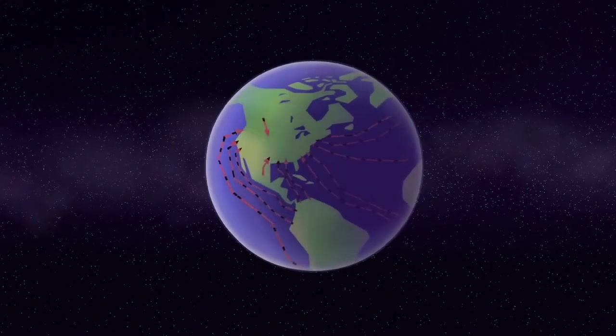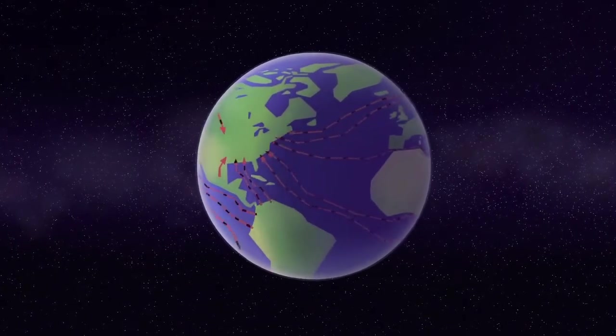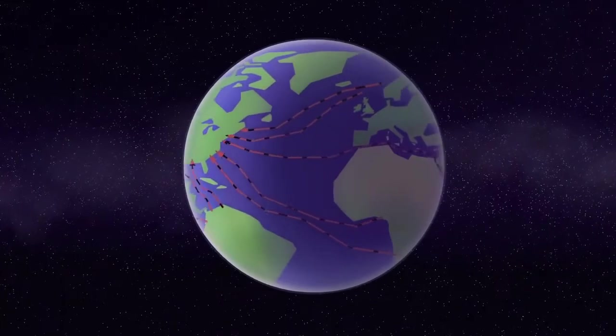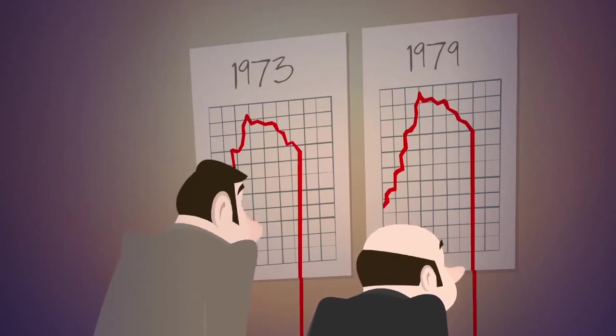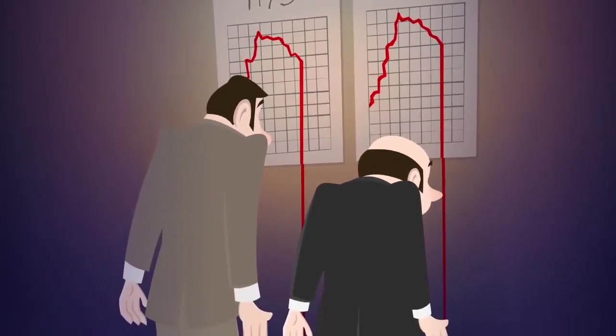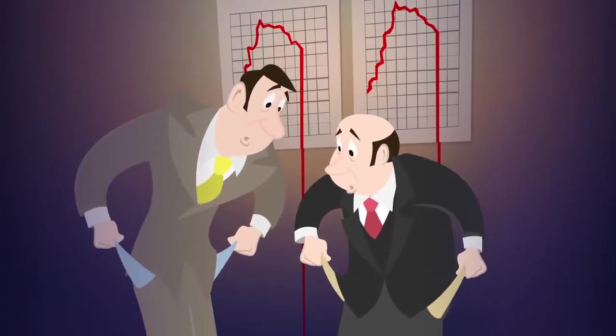From this point on, America would depend increasingly on imported oil. This made her vulnerable to supply disruptions and contributed to the economic mayhem of the 1973 and 1979 oil shocks.